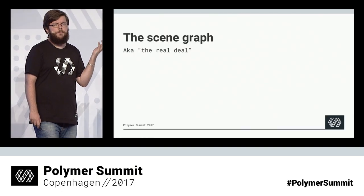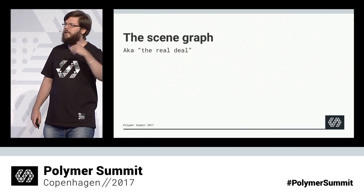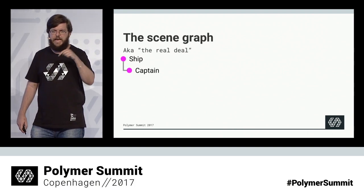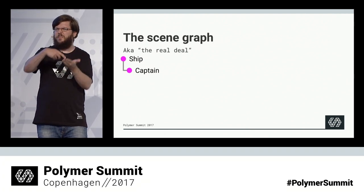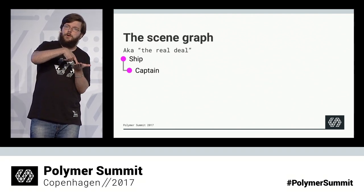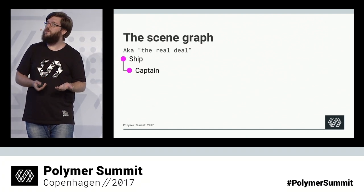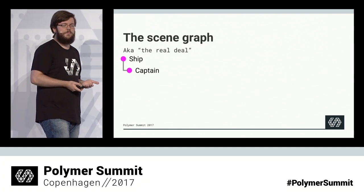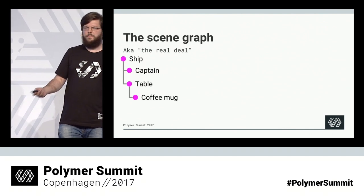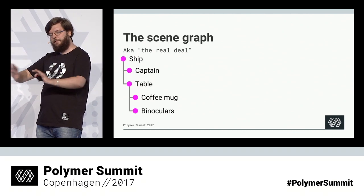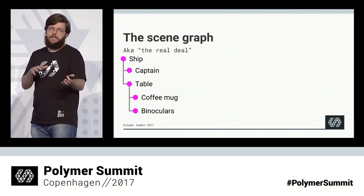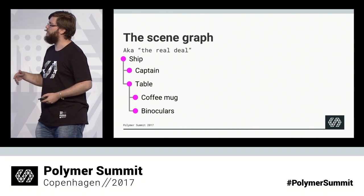But we're not only putting one thing on screen most of the time. So let's do a thought experiment. What if I have a ship that has a captain, and I want to move around the ship — then I have to move around the captain as well. How about we make that captain 3D model a child of the ship model, and if I move around the ship, the captain moves with it. Maybe there's a table on the ship, and on the table there's a coffee mug, binoculars, and a map. If I move the table, the ship and captain don't move, but the table moves — and with it, hopefully, the coffee mug and the binoculars and the map. So we have to build a tree.